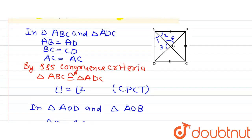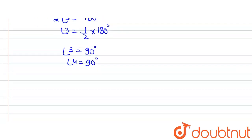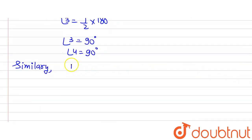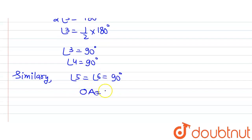So far we have proved that angles 3 and 4 are 90 degrees and OD equals OB. In a similar manner, we can prove that OA equals OC and that angles 5 and 6 — the remaining angles at O — are also equal to 90 degrees.